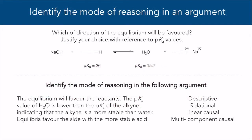Let's practice. We'll show some arguments to the following question: Which direction of the equilibrium will be favored? Justify your choice with reference to pKa values. For each argument, pause the video and identify the mode of reasoning used. Argument 1: The equilibrium will favor the reactants. The pKa value of H2O is lower than the pKa of the alkyne, indicating that the alkyne is a more stable acid than water. Equilibria favor the side of the more stable acid.